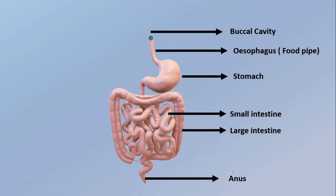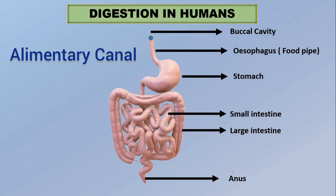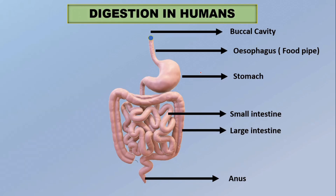We take in food through the mouth, digest and utilize it, and the undigested parts are expelled from the body. The food passes through a long muscular canal called the alimentary canal or digestive tract, which begins at the buccal cavity and ends at the anus. As shown in the diagram, digestion first happens in the buccal cavity. From the mouth, food goes into the buccal cavity, then to the esophagus — the food pipe — then to the stomach, then to the small intestine, then to the large intestine, and finally it is expelled out.